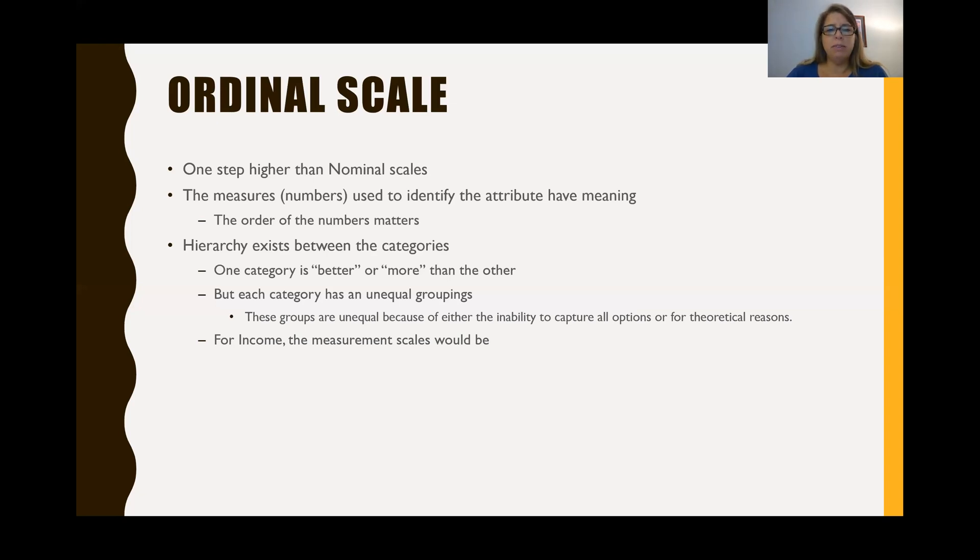So for income, for an example, for income, we could have the number one equals less than $25,000, which is a grouping of $25,000. Two could equal $25,000 to $59,999. And that would be a $34,999 grouping. We could make three equal to our category, which is $60,000 to $99,999 worth of income. And that would equal a $39,999 grouping. And then you have four, which is $100,000 or more. And this is an infinite grouping because it could go up to a million, billion dollars depending on their income.